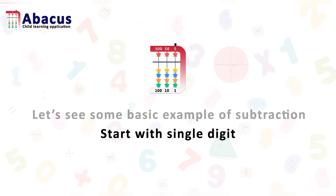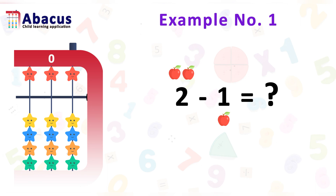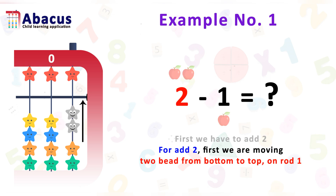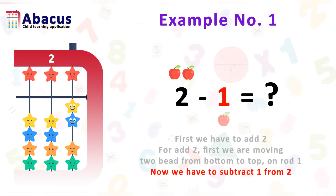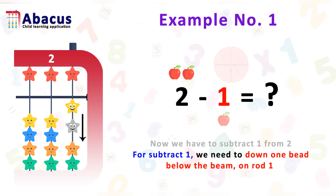Let's start with a basic example of subtraction. We are starting with single digits because it's easy. Our first example is 2 subtract 1. First we have to add 2, then subtract 1. For adding 2, we move 2 beads from the bottom up on rod 1 using the thumb. Now we subtract 1 from 2 — on the bottom of rod 1 we have 2 beads, so we can easily subtract 1 by moving one bead down below the beam.